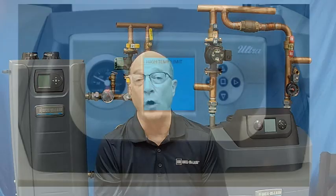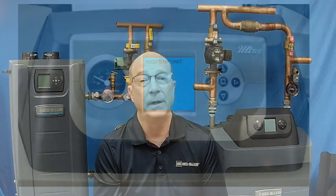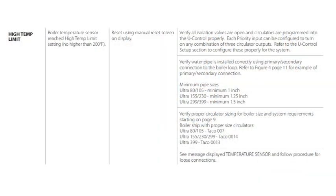If the boiler you are working on is the Evergreen or Eco boiler, it will display the fault name as you can see here. The display shows high temp limit. Then follow the manual to the proper solution for high temp limit.